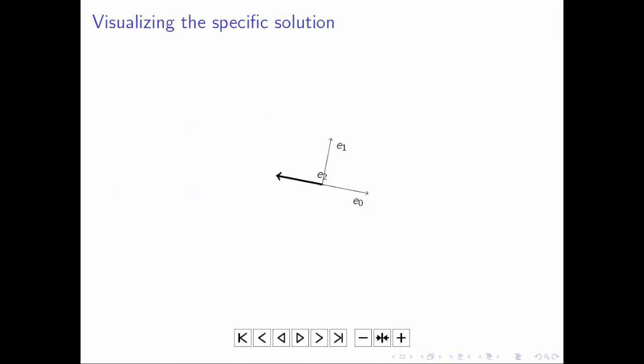How can we visualize that? Well, here we have our coordinate system. And notice that the thick vector points from the origin to a point in space that solves this linear system. And the linear system, of course, in this case is just one equation.